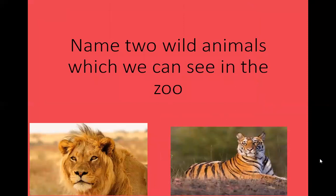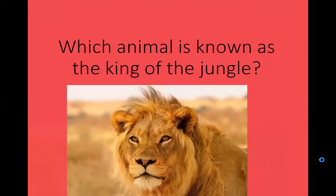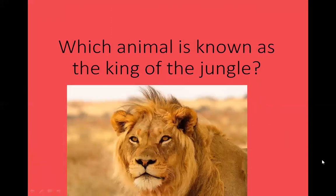Our next question: name two wild animals which we can see in the zoo. The answer is lion and tiger. Two wild animals which we can see in the zoo are lion and tiger.